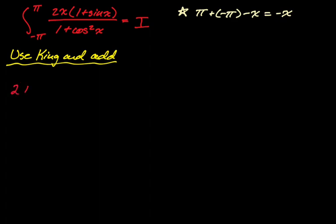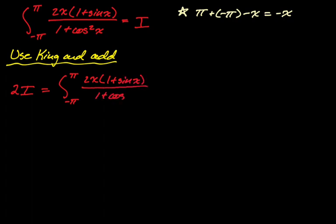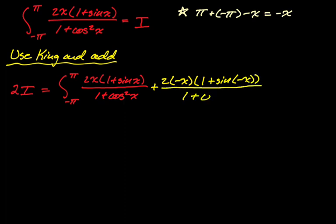That gives us 2I equal to the integral from negative pi to pi of the original integrand — 2x times the quantity 1 plus sine of x over 1 plus cosine squared of x — plus the integral we get from the King substitution, where every x becomes negative x: 2 times negative x times the quantity 1 plus sine of negative x, over 1 plus cosine squared of negative x.